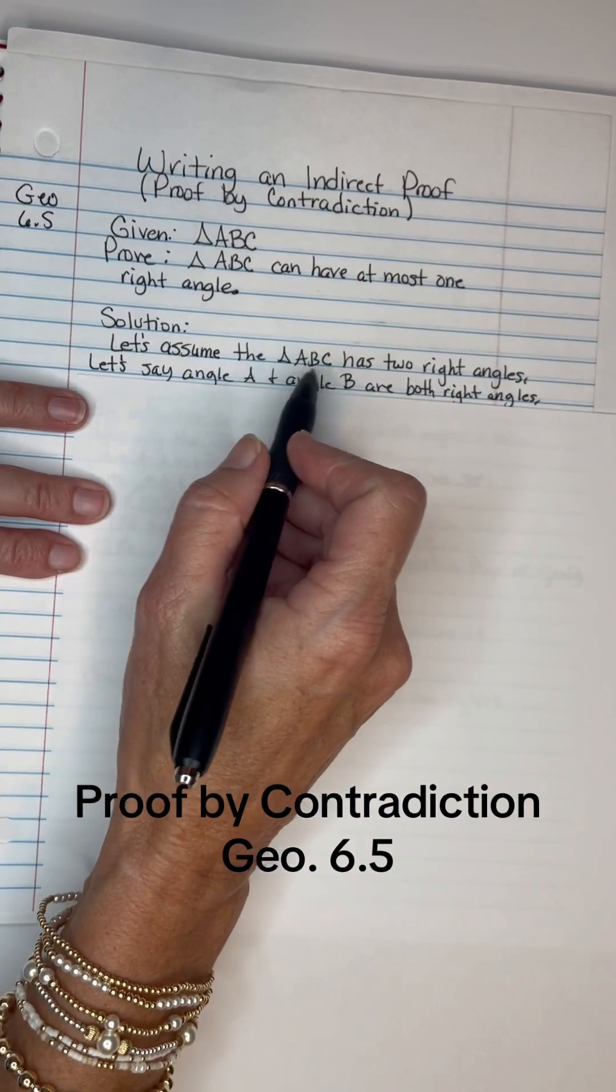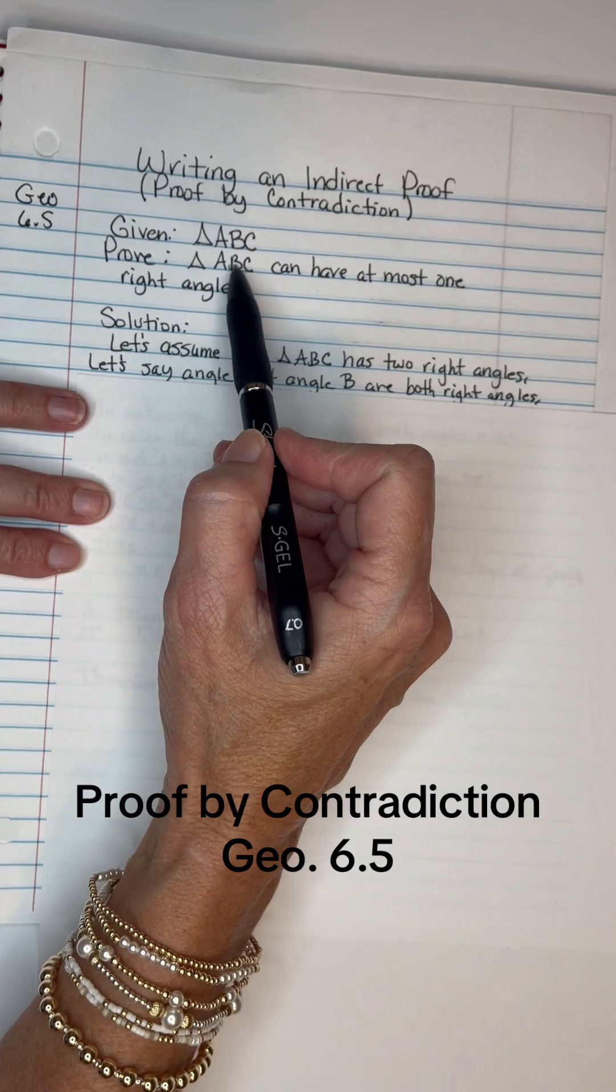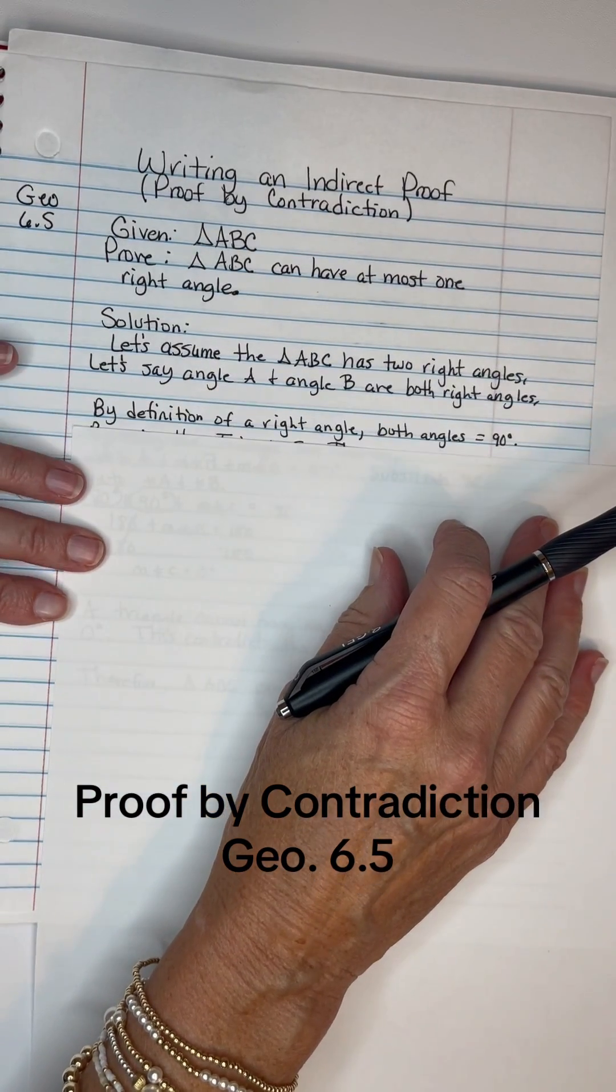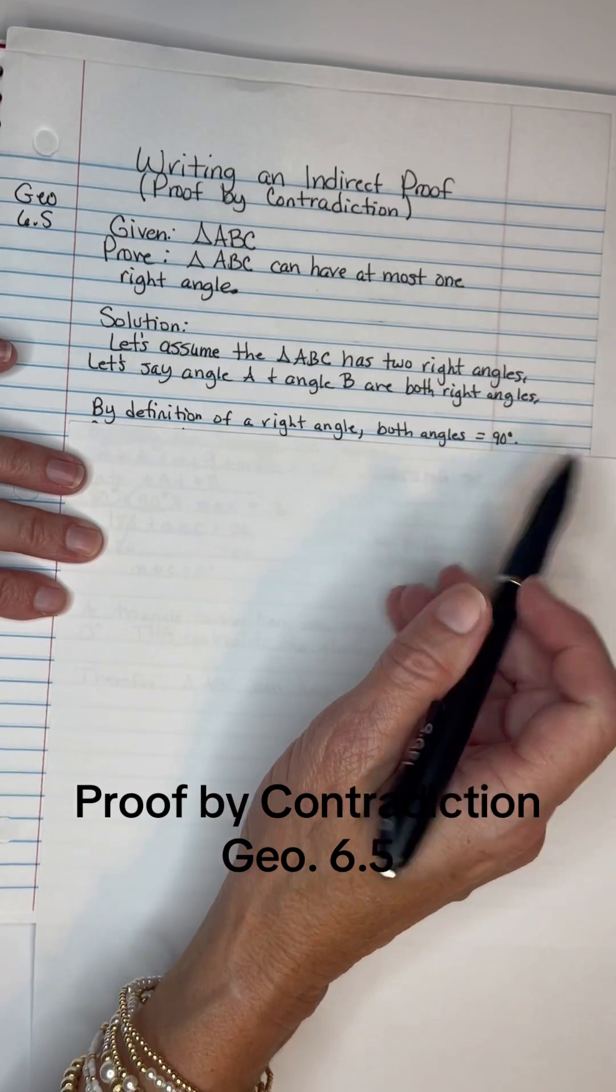Let's say angle A and angle B are both right angles. So we're telling you that these two are the ones that are right angles. Now remember that right angles are 90 degrees. By the definition of a right angle, both angles equal 90 degrees.